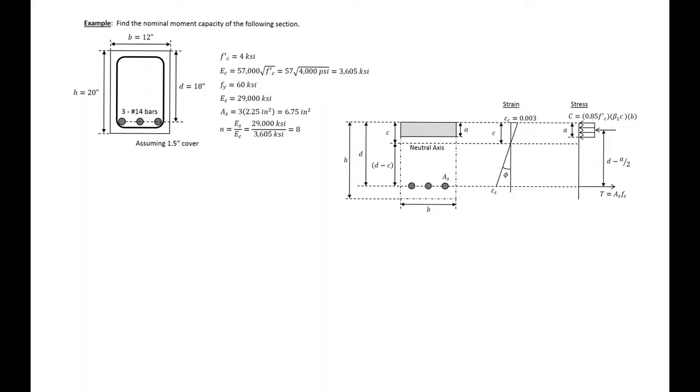In this example problem we're going to find the nominal capacity of the given section that's shown here. For this problem we'll first need our strain and stress diagrams. So I have them drawn here already where you can see we're going to use the rectangular stress block approximation.